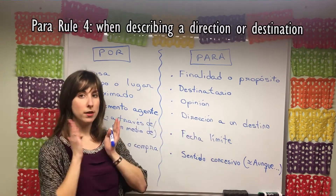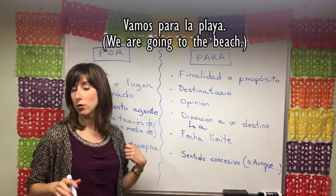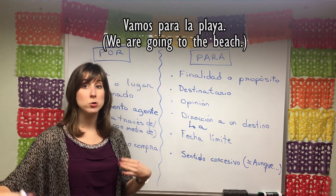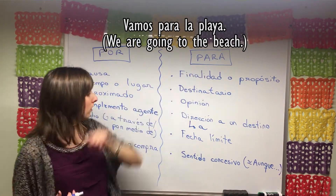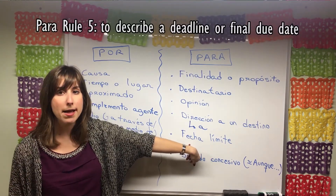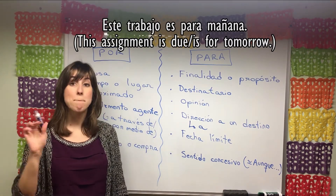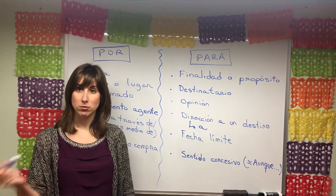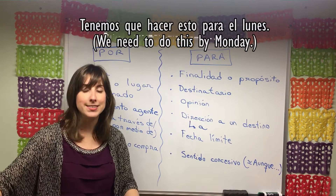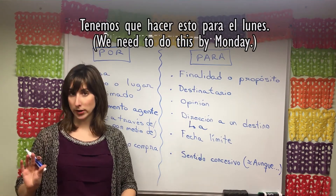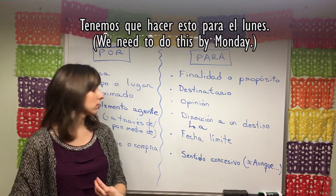Para is also used for direction — as another way of saying 'a': 'Vamos para la playa este verano' — we're going to the beach this summer. And for deadlines and due dates: 'Este trabajo es para mañana' — this assignment is due tomorrow. Or 'Tenemos que hacer esto para el lunes' — we need to do this by Monday. 'Esto tiene que estar listo para el lunes.'